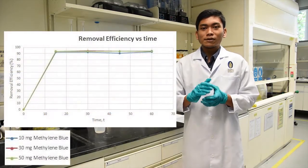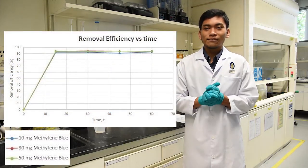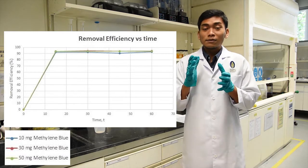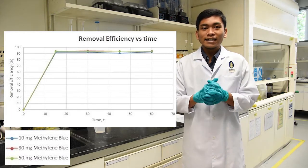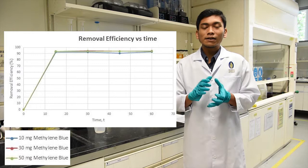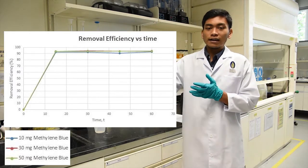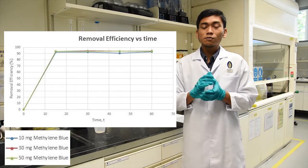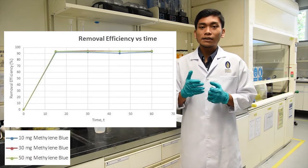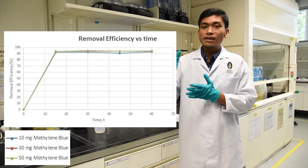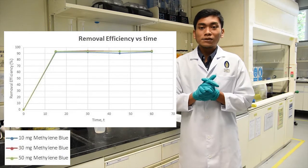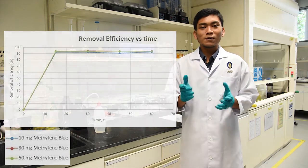The first graph is about the removal efficiency versus time. The main objective of the experiment is to reach at least 70% of removal efficiency. Based on the graph here, all samples reach 92% of removal efficiency at t equals to 15 minutes and remains there until the end of the experiment, which shows that our experiment was successful.